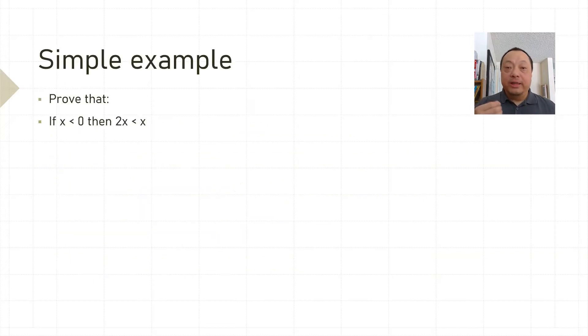Let me show you a simple example before moving on. Suppose we want to prove that if x is less than 0, then 2x is less than x. For clarity, I highlight to separate out the premise and the conclusion. The premise is x is less than 0. The conclusion is 2x less than x.